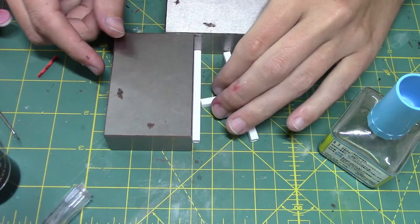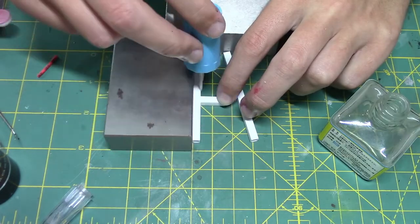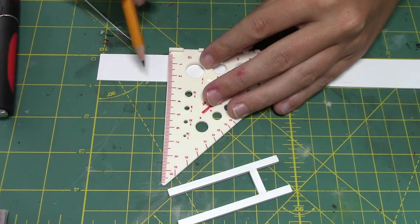The sign's base and supports are made up from various styrene parts. I am using a hollow square tubing for the supports, and a flat sheet for the base.